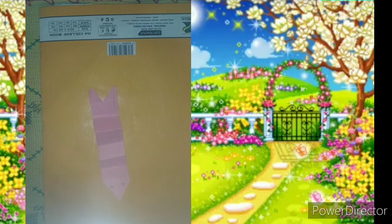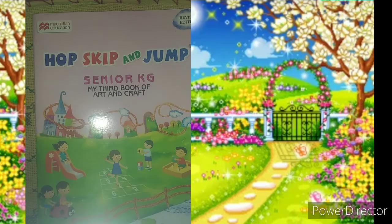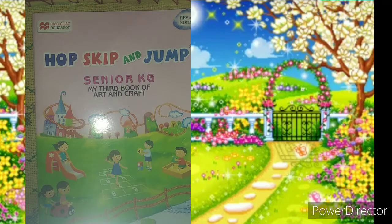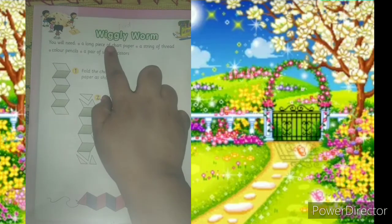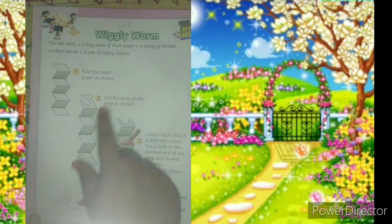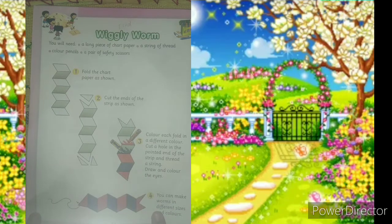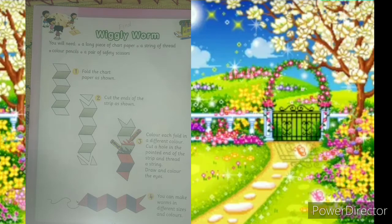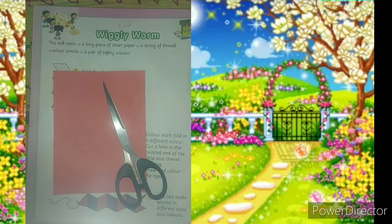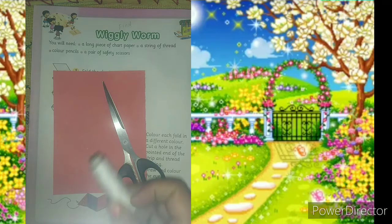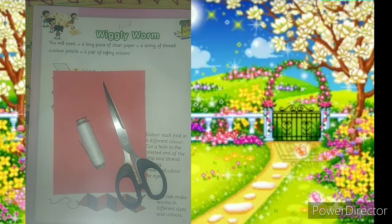So my senior KG kids, we are going to make a Wiggly-Woo. Take out my third book of art and craft. Open the page number 52, Wiggly-Woo. Now we will follow this step and make a Wiggly-Woo. Now you need for this activity: one craft paper, scissor, thread, and marker color.